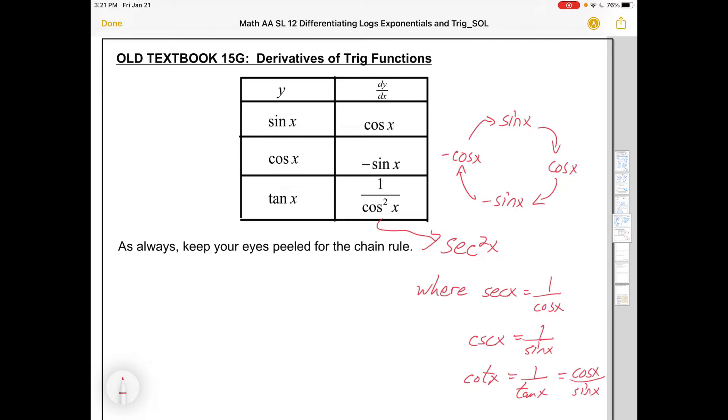As always, we've got to look for the chain rule. So if you have y equals sine of a glob, well then its derivative will become cosine of that glob times the derivative of the glob. Remember, we're not saying sine times x, it's sine of x here.